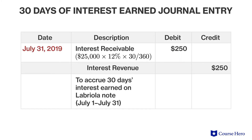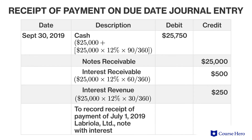At the end of July, Schulte will record the accrual of the first month's worth of interest, based on one month at 12% of $25,000. Since this was a 90-day note, and assuming Labriola makes payment as promised, at the end of the 90 days Schulte will receive a payment for the principal balance of $25,000 plus three months' worth of interest, or $750.